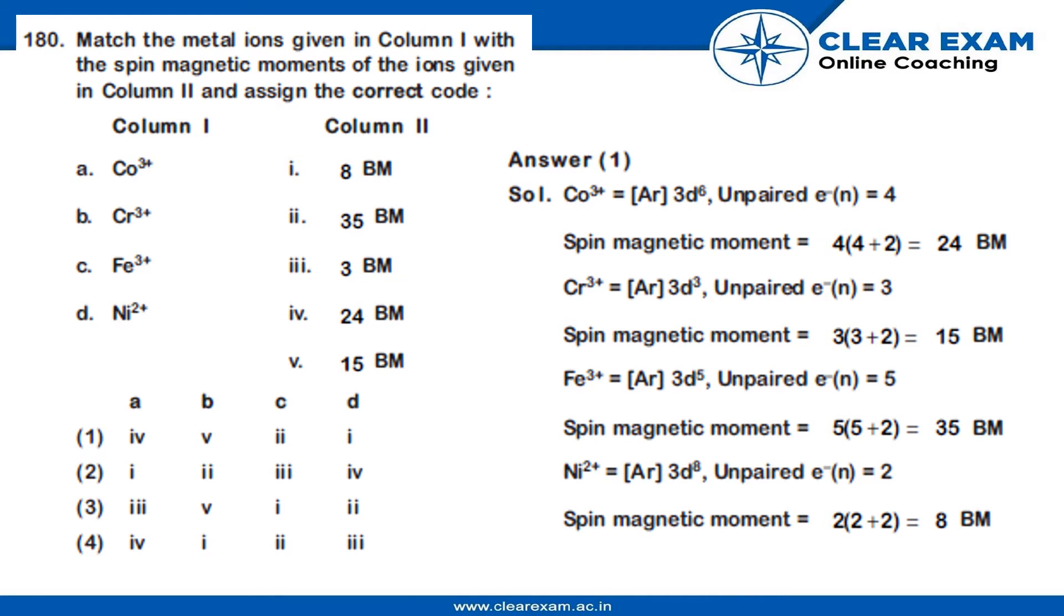In this question, match the metal ions given in column 1 with the spin magnetic moments of the ions given in column 2 and assign the correct code. So, let us solve this.